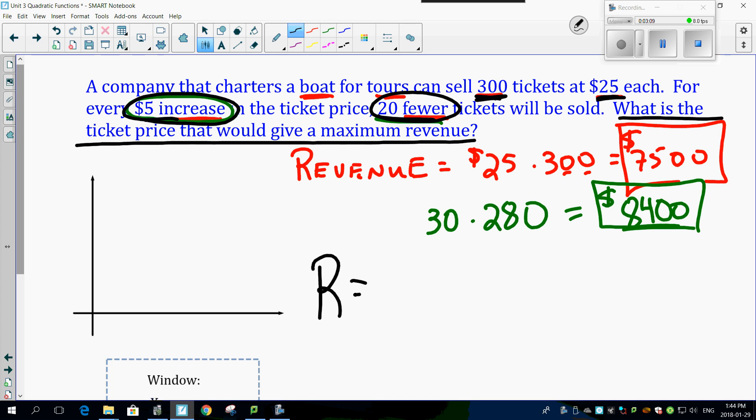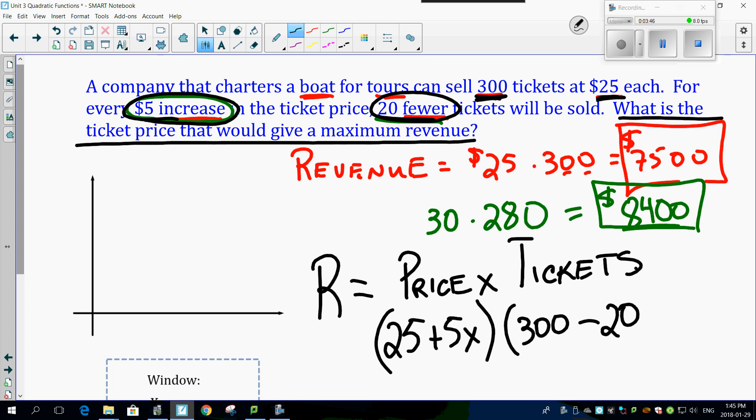Let's figure this out. So revenue, which we'll call R, is ticket price times the number of tickets sold. That's price times the number of tickets. But the price is $25 and I'm going to increase this by $5 increments, so that's 5x. My tickets are going to be 300 minus 20 for every increase in price. So the x stands for price increases. Look at that, I've got a quadratic equation right there. Isn't that interesting?